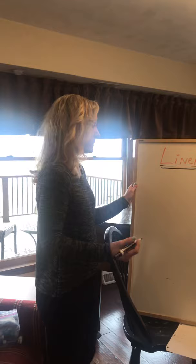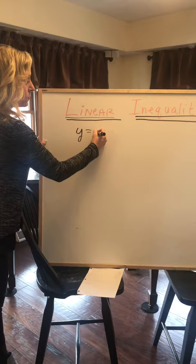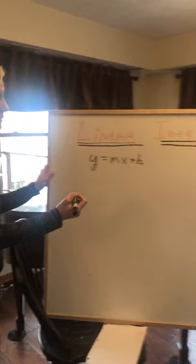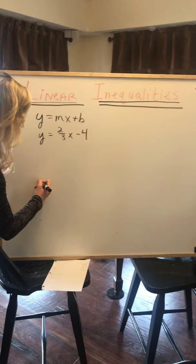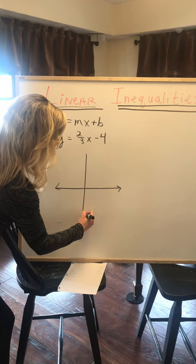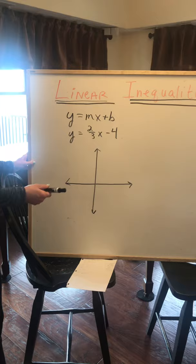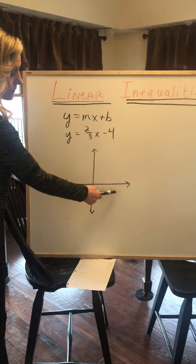We already know slope-intercept form of y equals mx plus b. We have graphed lines like this, y equals two-thirds x minus 4. We graph that in the coordinate plane. There's our x-axis, there's our y-axis. Let's just review the quadrants in case anybody needs a review: 1, 2, 3, 4, and this is our origin, 0, 0.